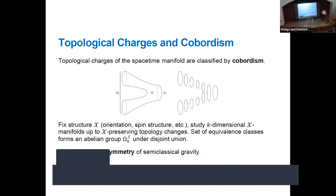We usually care about more structure on our manifolds than just their point-set topology. If our degrees of freedom depend on more structure, such as an orientation or a spin structure, then we fix that structure and look at k-dimensional manifolds with that structure up to structure-preserving topology changes. The set of equivalence classes forms an abelian group where the group operation is disjoint union. The basic observation is that cobordism defines a global symmetry of semi-classical gravity — the cobordism class of a closed slice of spacetime is invariant under any possible process by definition of cobordism, so it's a conserved charge defined on a closed manifold.